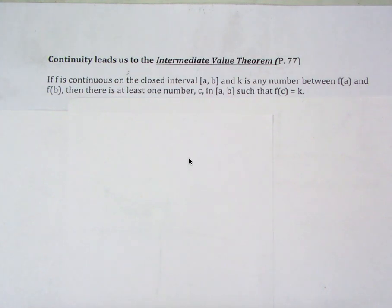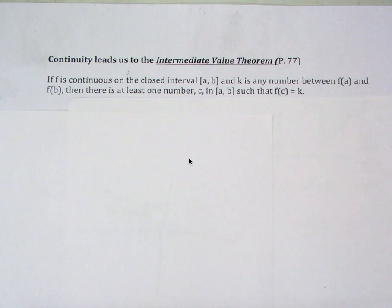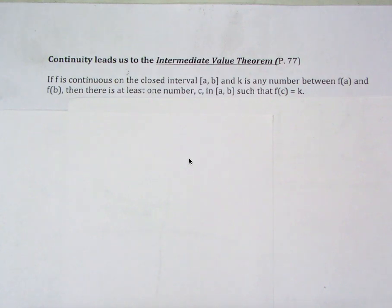This is also known as what's called an existence theorem. This theorem is not going to help you find anything. All this theorem is saying is that it's going to happen, but it doesn't help you find it. We'll talk about finding it when we do an example.